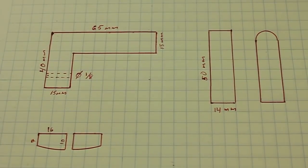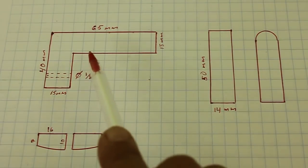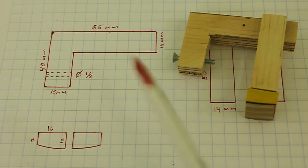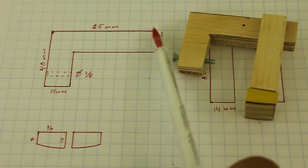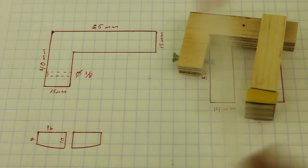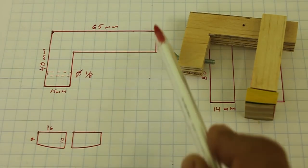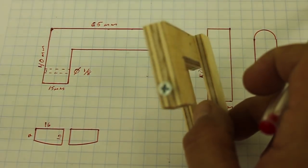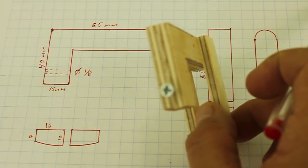These are the different parts of the walker. This is the main body. This is this part in here. 65 mm in length, 40 mm in height, and we have here 15 and 15. And it's made out of a piece of wood of 10 mm in width.